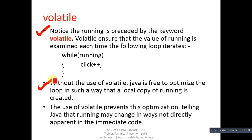Without the use of volatile, Java is free to optimize the loop in such a way that a local copy of running is created. So without volatile there are two copies — one is actual and one is local. If you change the actual variable, it might be possible that the local copy is not updated, and you will receive incorrect outputs or results.